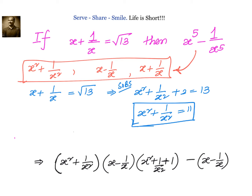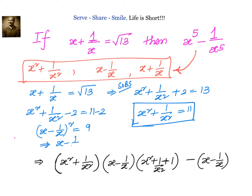Then we also need x minus 1 by x. For that: x square plus 1 by x square minus 2 equals 11 minus 2, which gives x minus 1 by x whole square equals 9. So x minus 1 by x equals 3. This is another value we need.